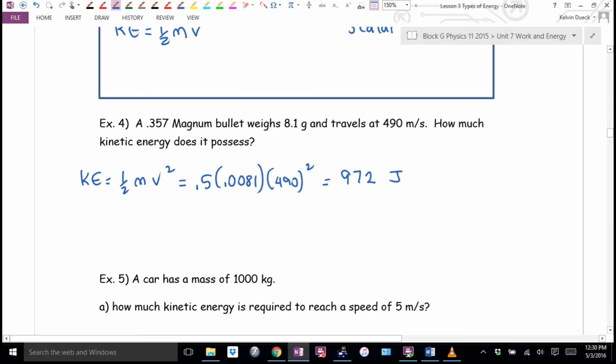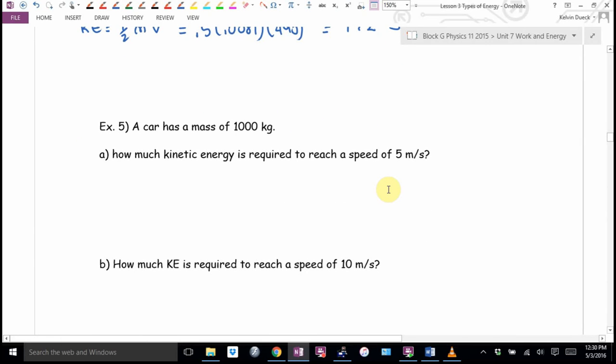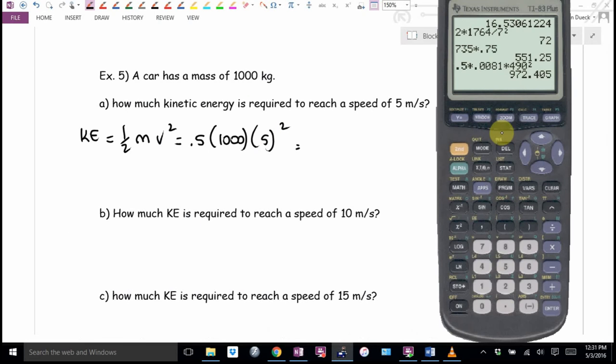I'll call it 972 even. 972 what? Energy, the ability to do work. That's why work and energy have the same units. Again, what that means is if that hit an object, it would definitely apply a force over a distance, possibly a fatal force over a distance if it hit a living object. Car has the mass of 1,000 kilograms. I'm making up nice round numbers. How much kinetic energy is required to reach a speed of 5 meters per second? Well, KE equals a half mv squared. What's the mass? 1,000. What's the speed? 5 meters per second squared. What do you get?